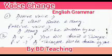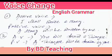Example 1, active voice: I shall write a story. Passive voice will be: a story will be written by me. Similarly, example 2, active voice: you will draw a triangle. Passive voice will be: a triangle will be written by you. In this way we can change from active voice to passive voice in English grammar.